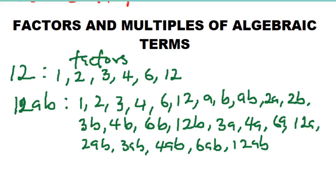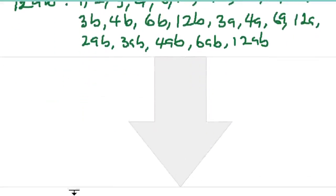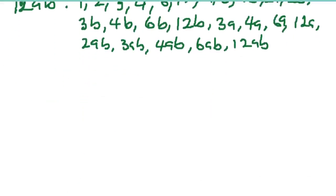We are going to find common factors and the highest common factor in each of the following. Any number that can divide the term 12ab is a factor of 12ab, and 12ab becomes a multiple of such a term. Let's go ahead and use this to do some work.